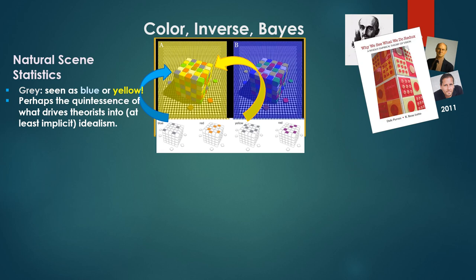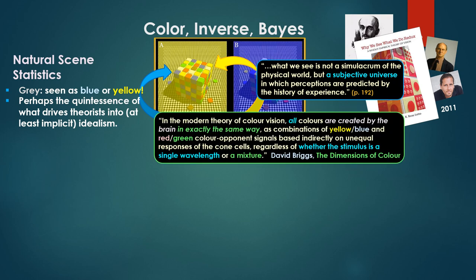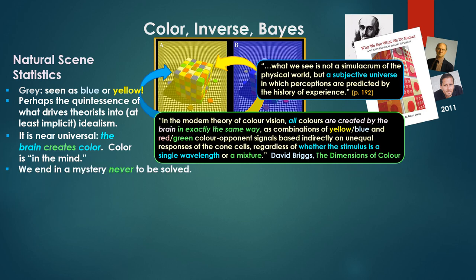Gray seen as either blue or yellow. Perhaps the quintessence of what drives the Earth into at least an implicit idealism. To quote Purvis and Lotto, what we see is not a simulacrum of the physical world but a subjective universe in which perceptions are predicted by the history of experience. To quote David Briggs, the dimensions of color: in the modern theory of color vision, all colors are created for the brain. All in exactly the same way as combinations of yellow, blue and red, green color opponent signals in the retina based indirectly on unequal responses of the cone cells.